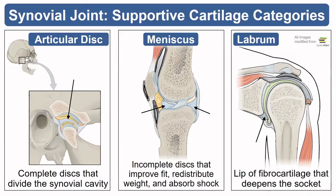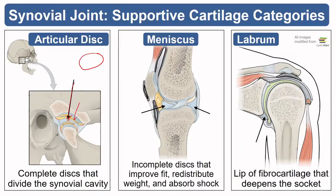Fibrocartilage is another common addition to synovial joints — it is supportive cartilage that comes in many different shapes. The first type is an articular disc, which is a full circular disc. In cross-section, it actually separates the synovial joint into two functional cavities, changing what movements are available at that joint. The example shown here is the temporomandibular joint, or TMJ.